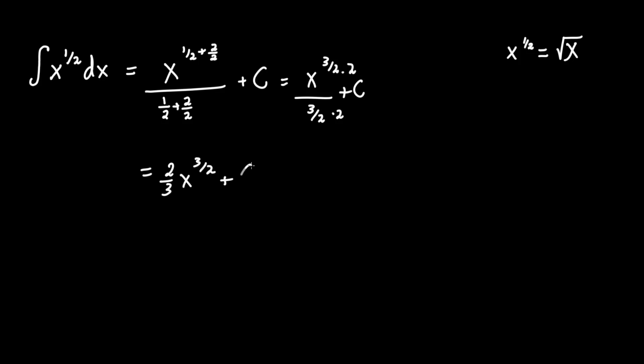Still plus C, because C is any constant, so even if you multiply it by 2, it will remain as the constant form. So when you multiply the denominator 3/2 by 2, you get 3 in the denominator, and the numerator gets times 2, so you get 2/3 x to the 3/2 plus C as your final answer.